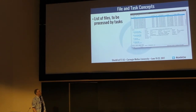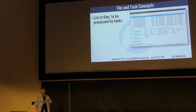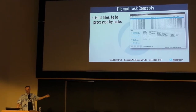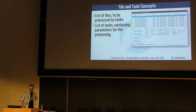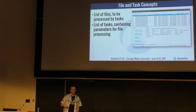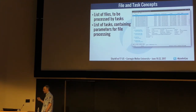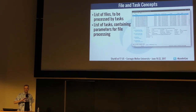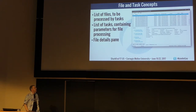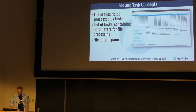File and task concepts. Trace Wrangler has a file list where you add all the files you want to process — using buttons or drag and drop. Then there's a list of tasks; usually there's only one task, but you can run multiple tasks on the same set of files. There's also a file details pane in the lower right, similar to capinfos, telling you how many packets are in the file, its duration, and whether it's in correct time order.